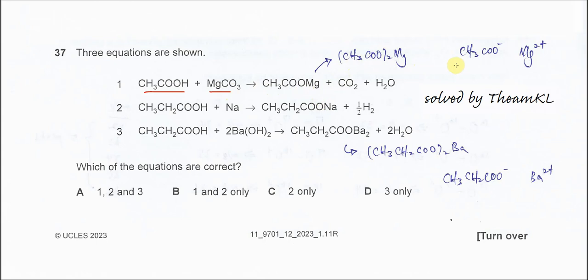Because magnesium is a group 2 element, so it's Mg2+. And the anion, the ethanoate ion, is charge negative. So therefore the formula should be this one. Therefore this equation is wrong.